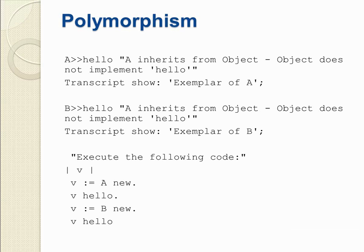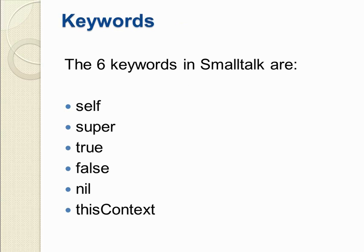That concludes our short video presentation on object-oriented concepts in Smalltalk. As you will note from the sample code shown, everything is done using only objects, their instances, and their methods. There is no special syntax or keywords for creating classes or their constructs. In fact, there are only 6 reserved keywords in Smalltalk: self, super, true, nil, and thisContext. By comparison, Ruby has 38, Java has 52, and C# about 76.